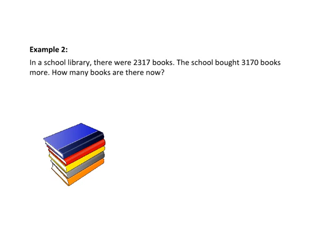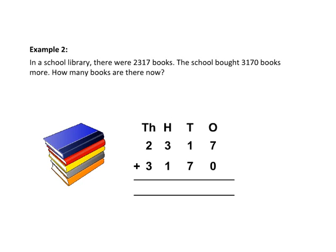Here we will add old and new books. Arrange the numbers in columns and then add. So, the total number of books in the school library is 5487.